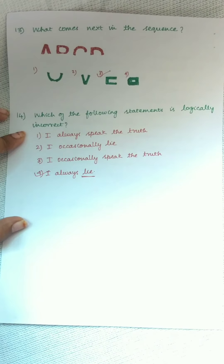What comes next in the sequence? This is also very simple. You can see this is the top portion of A, B, C, and D. So the next one will obviously be E. So the third option is the right answer.